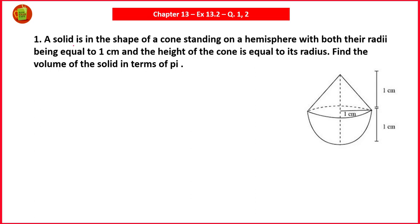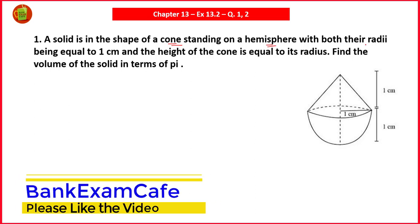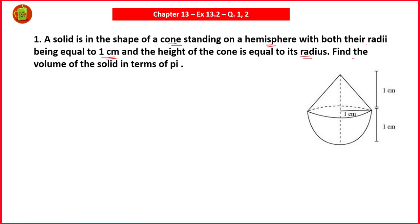Here is question number 1 on the screen. A solid is in the shape of a cone standing on a hemisphere with both their radii being equal to 1 centimeter, and the height of the cone is equal to its radius. Find the volume of the solid in terms of pi. Here is a solid where a cone is standing on the hemisphere, with the radius of both being 1 centimeter and the height of the cone also 1 centimeter.